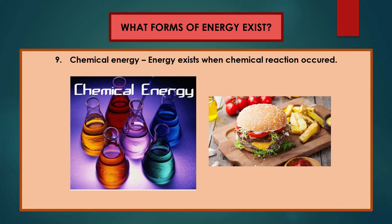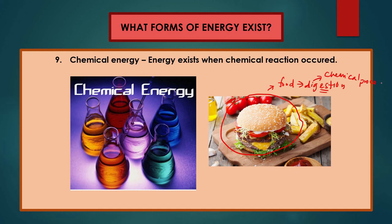Chemical energy is an energy that exists when a chemical reaction occurs. Food is also a source of chemical energy — food eaten inside our mouth undergoes digestion, and digestion is a chemical process. So when a chemical process is involved, chemical energy will be produced when the reaction occurs.